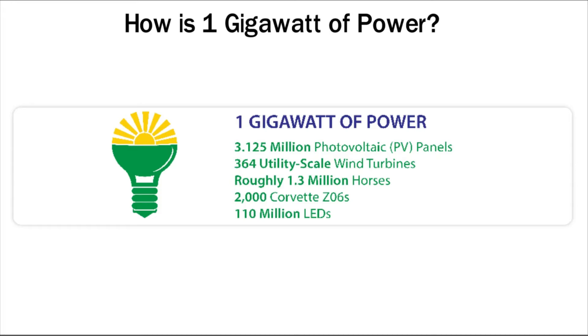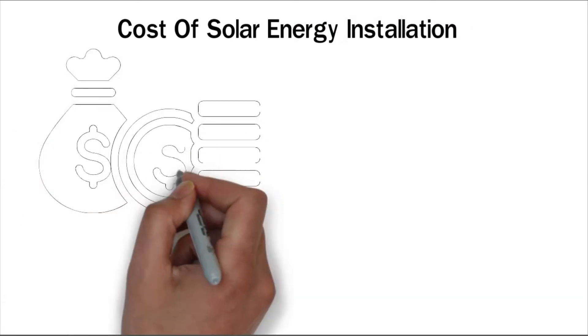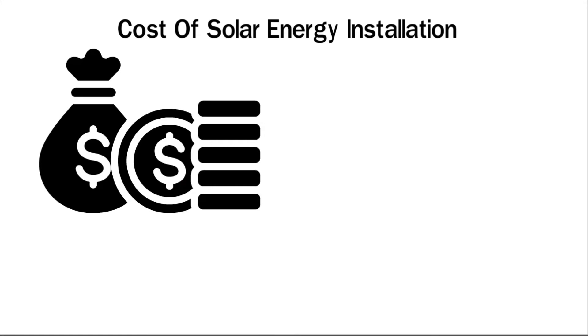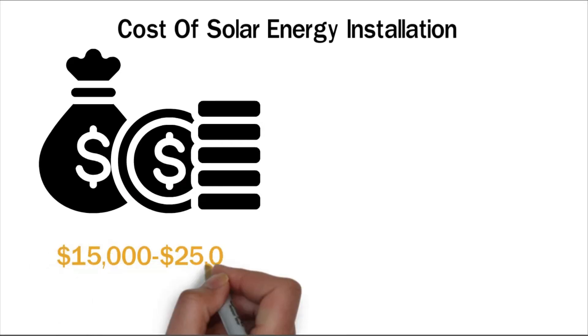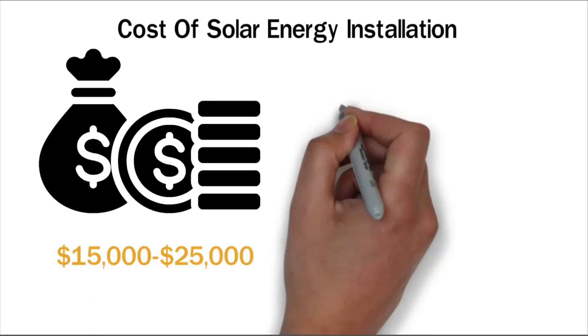Cost of solar energy installation. The cost of solar energy installations has dropped dramatically in recent years, with the average new system in America costing $15,000 to $25,000. This cost is before any tax credits or other discounts.